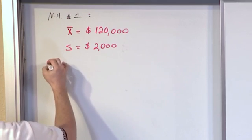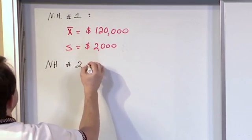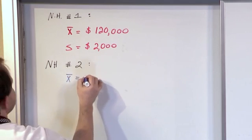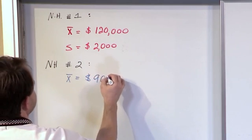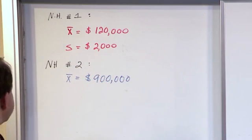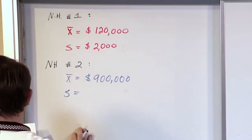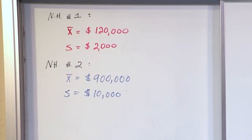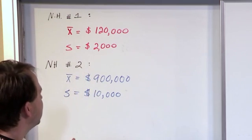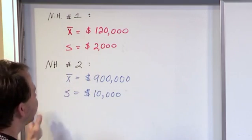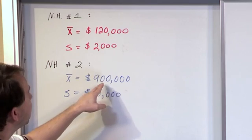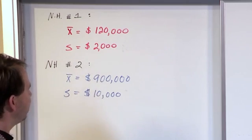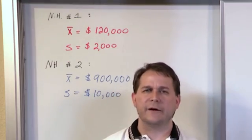Now let me compare that to neighborhood number two. The average selling price in neighborhood number two is nine hundred thousand dollars — way outside of my price range. But the standard deviation in neighborhood number two is ten thousand dollars. That means the houses are much, much more expensive on average — almost a million dollars. Most of the houses in this neighborhood lie between eight hundred and ninety thousand dollars up to nine hundred and ten thousand dollars, so plus or minus ten thousand dollars around that mean.